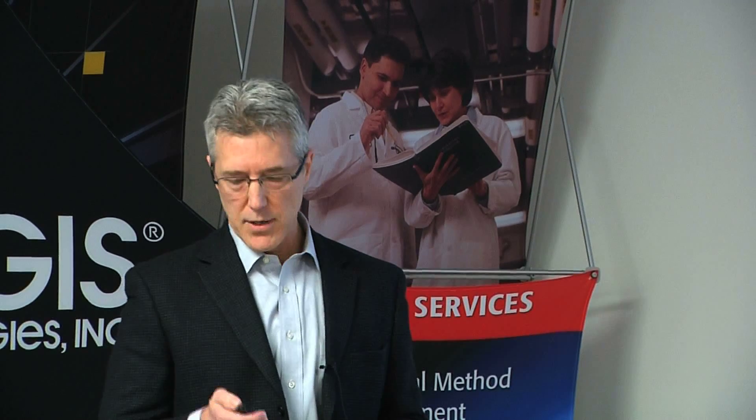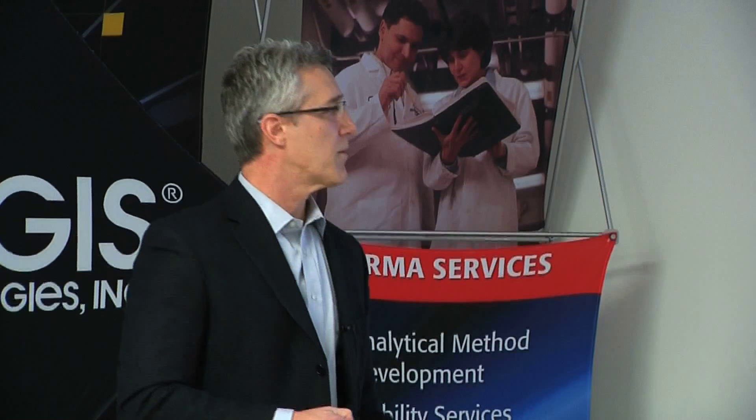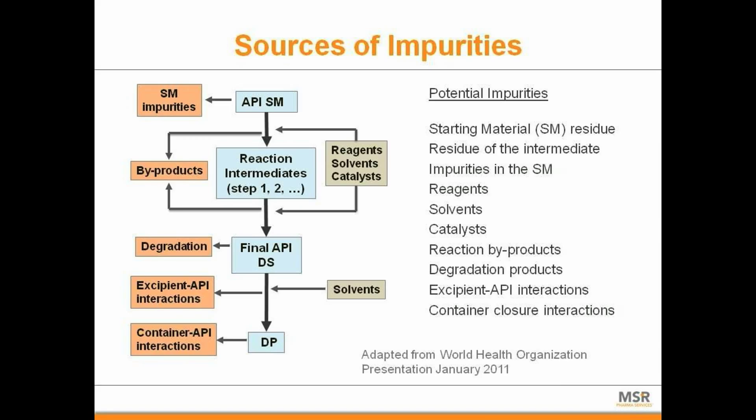I want to make sure we're all on the same page — this is rather basic for a lot of you — but impurities can come from a variety of different places along the manufacturing pathway. Starting materials and APIs are a big source of impurities. Reagents, solvents, and catalysts used for synthesis form reactive intermediates and byproducts. You also have degradation of the final API drug substance, and forced degradation studies can help identify potential materials early on. Excipient-API interactions and containers storing drug product are also sources of contamination from leaching.